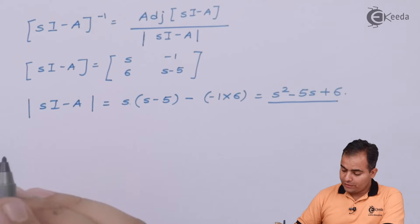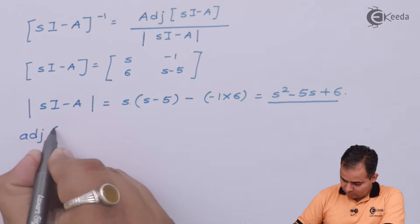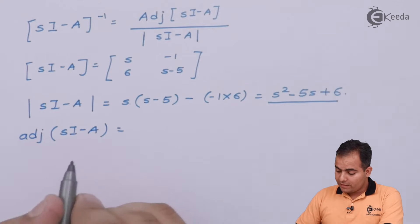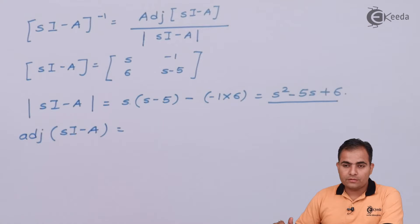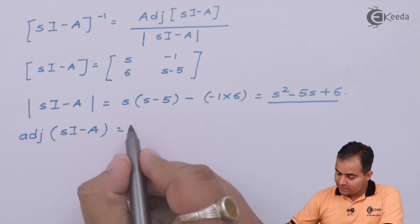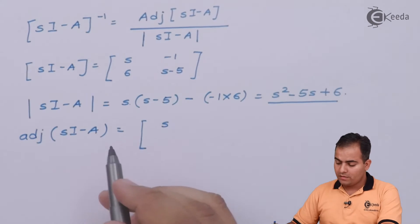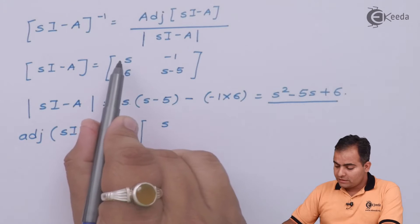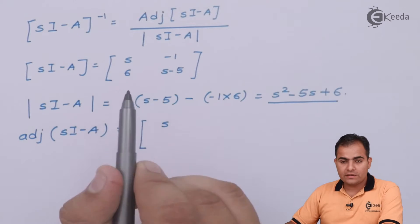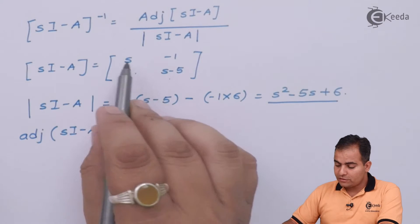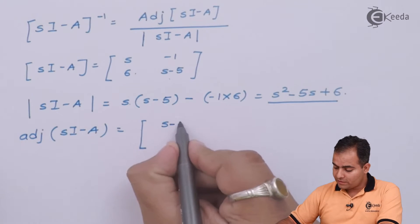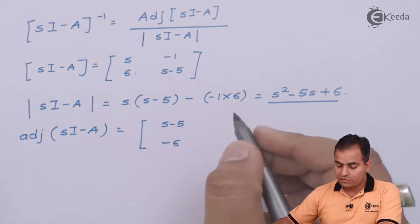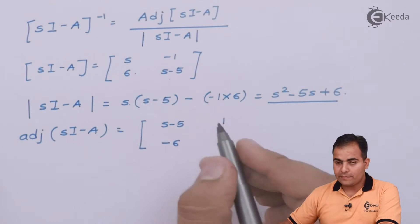Now we find the adjoint of (sI - A). The shortcut for a 2×2 matrix is to exchange the two diagonal elements and multiply the off-diagonal elements by minus 1. So the first element becomes S - 5, the off-diagonal -1 becomes +1, +6 becomes -6, and the last diagonal element is S.